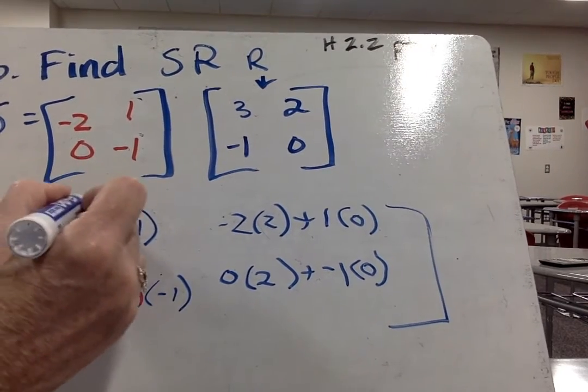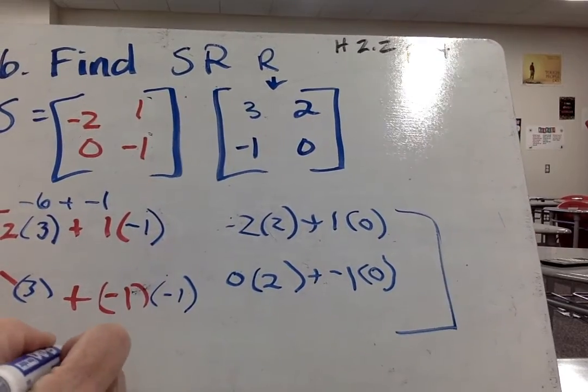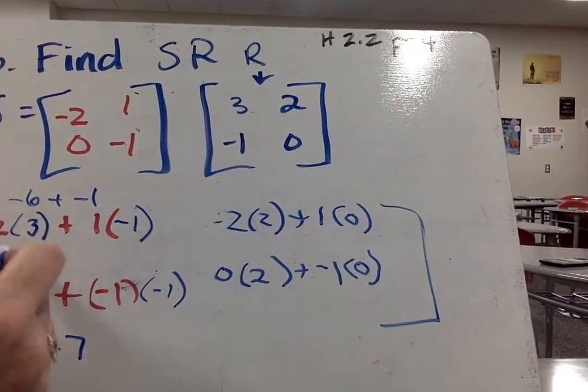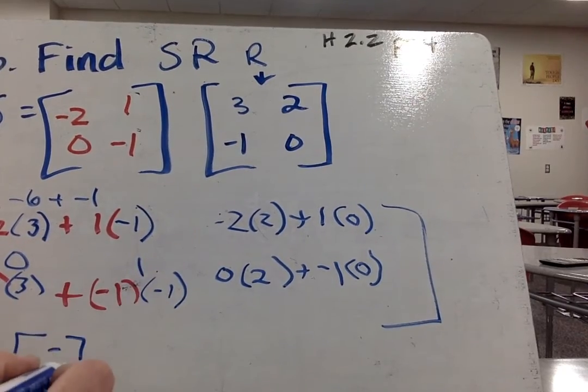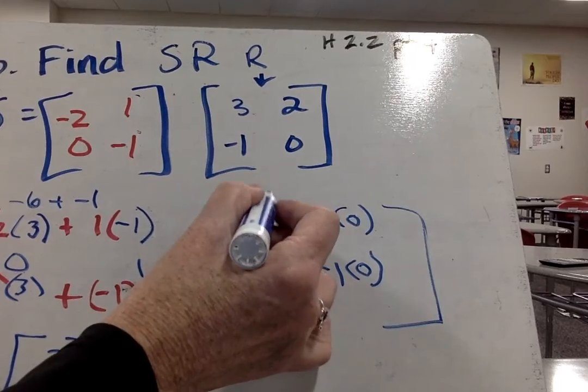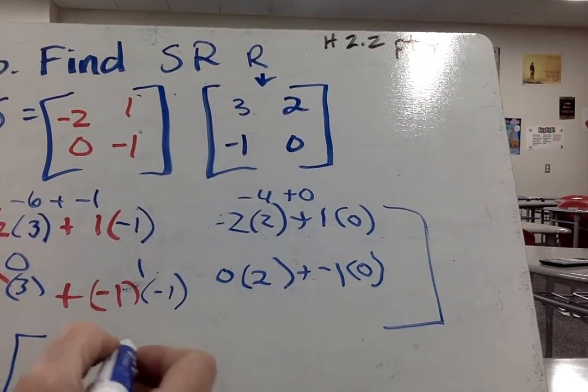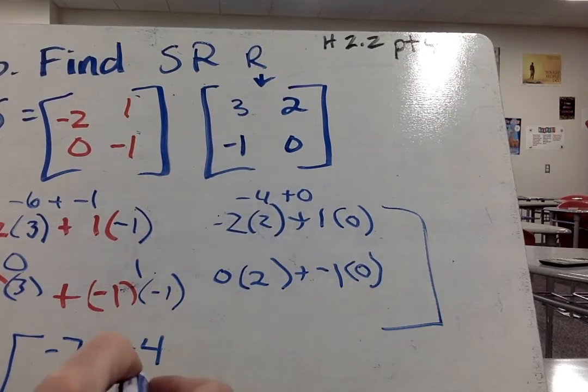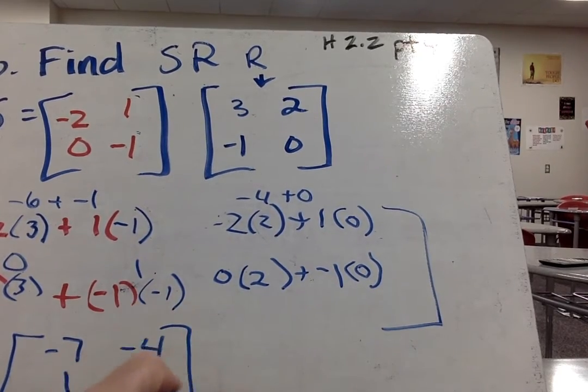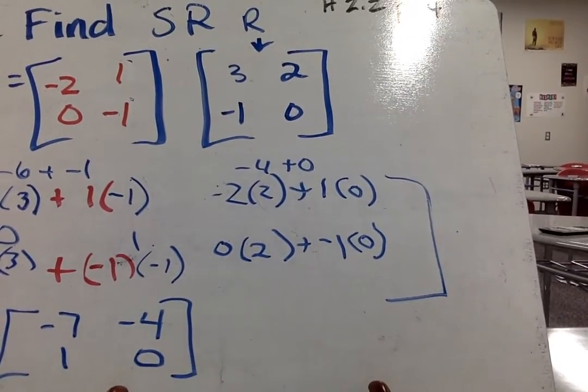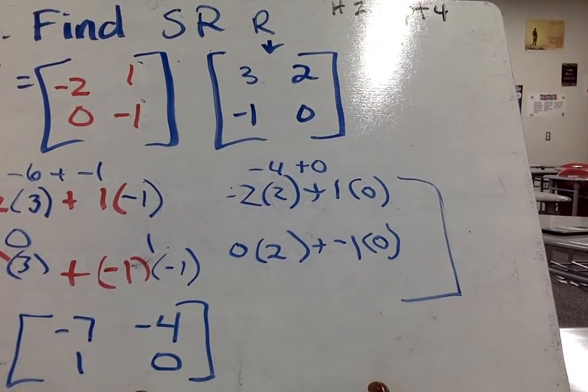This is negative 6 plus negative 1, that gives me negative 7. Then this is 0 and that is 1. This one, negative 4 plus 0, and then we go 0 plus 0.